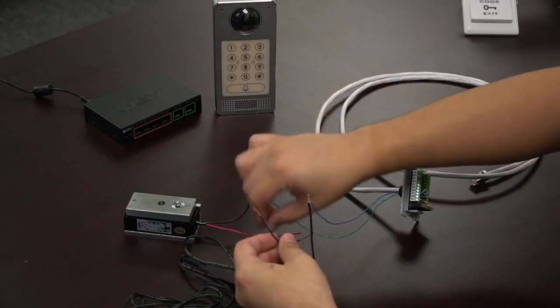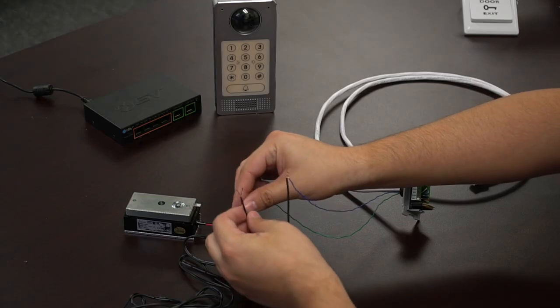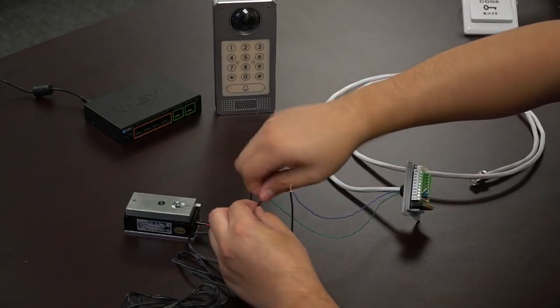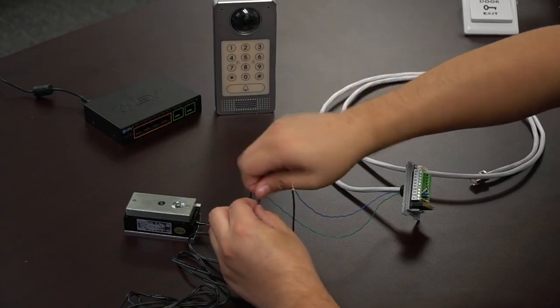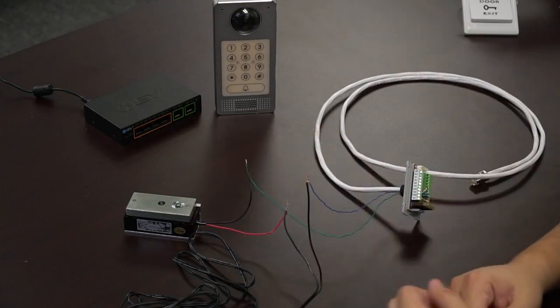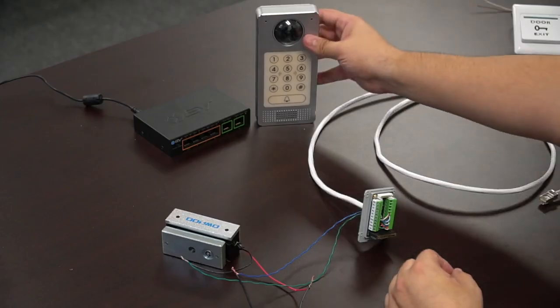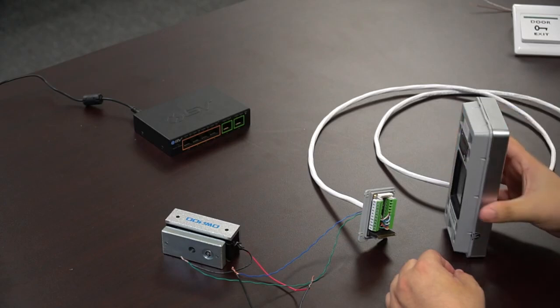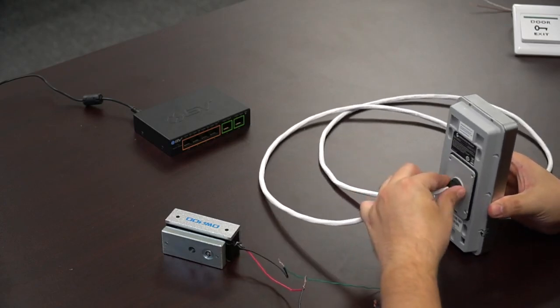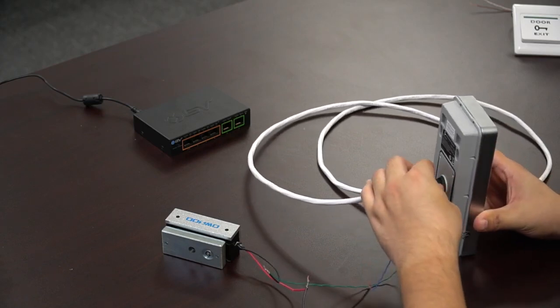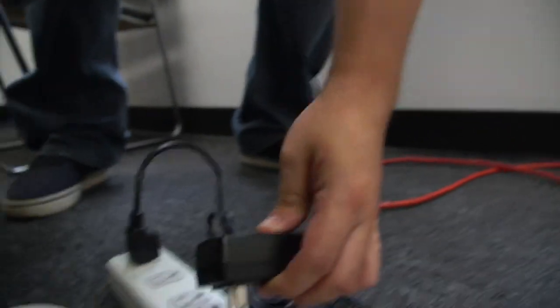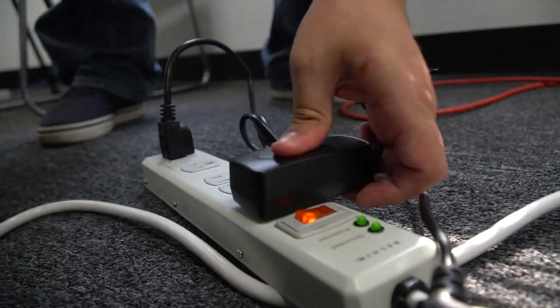Alright, once those two wires are connected, we're going to go ahead and plug the power end of the power supply directly to the power of the MagnaLock here. Now, we're only hooking up these three wires because we're going to actually plug everything in and make sure that it all works. Plugging the power supply in and you should hear an audible click if you're using the MagnaLock.